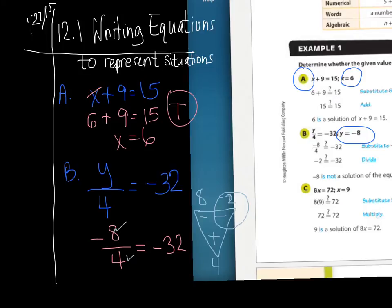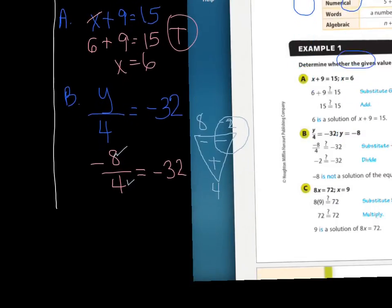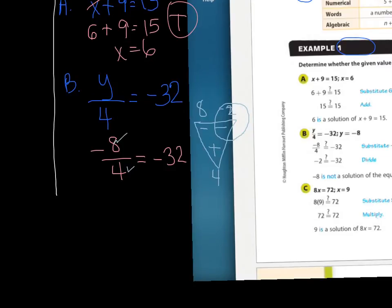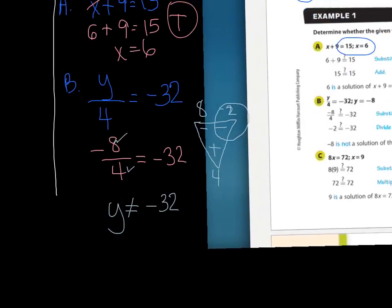No. When you multiply those two, you get negative 32, but not divide. So the way we would write that is like this. It's pretty neat. y does not equal, like that, negative 32. Alright, last example on this page for c.